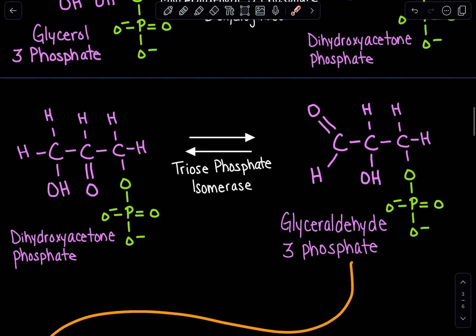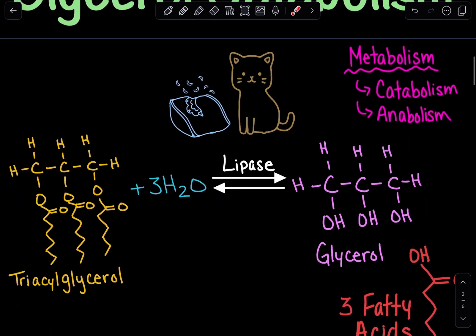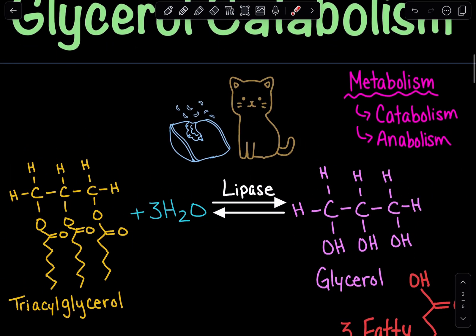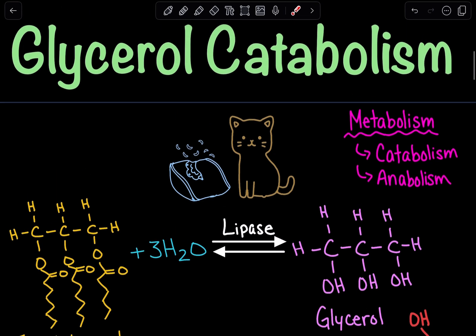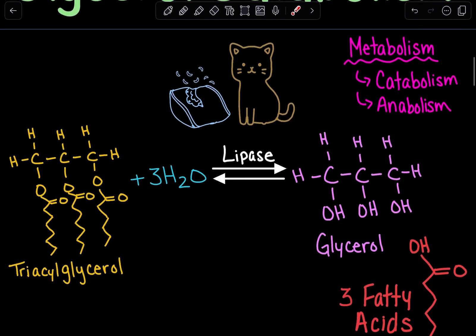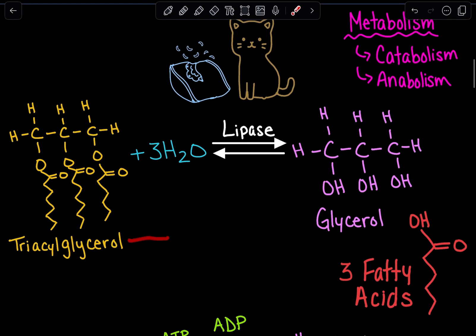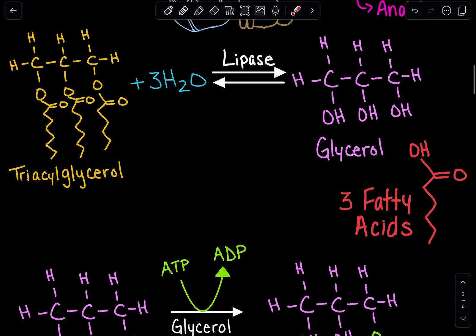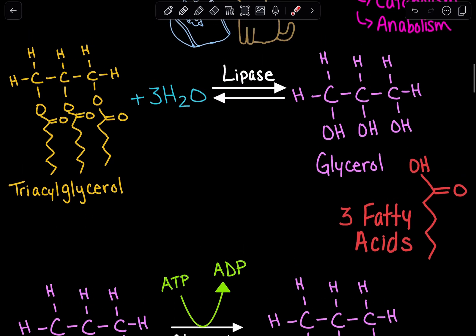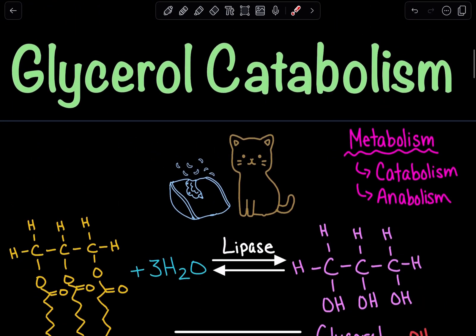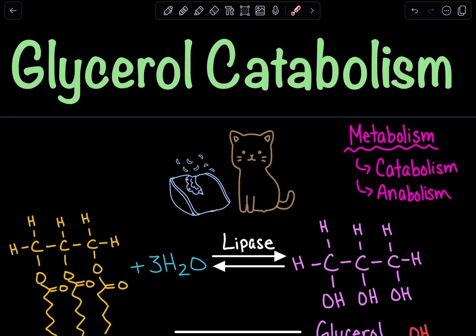So what was the whole purpose of glycerol catabolism? The purpose is to gain energy. We utilize glycerol catabolism when we are low on glucose, because we're going to have to use an alternative energy pathway — glycerol breakdown — and we can also use the fatty acids in beta-oxidation. Glycerol catabolism is essentially an alternative energy production mechanism.